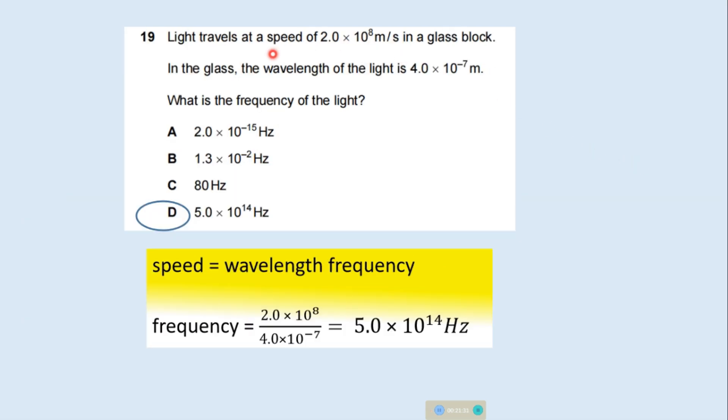Light travels at a speed of 2.0 into 10 to the power 8 meters per second. The wavelength of the light is given. You have to calculate the frequency of the light. We know the relationship: speed equals wavelength multiplied by frequency. Frequency equals speed divided by wavelength. Speed and wavelength given here. So frequency is 5 multiplied by 10 to the power 14 hertz. Option D.